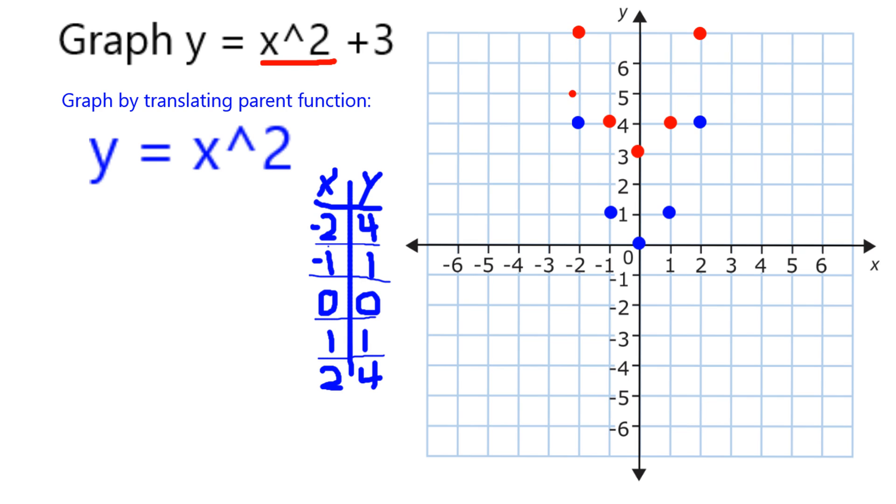So this new graph in the red dots represents that transformation, each point moving up exactly 3 units.